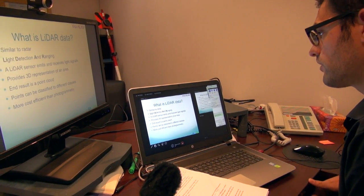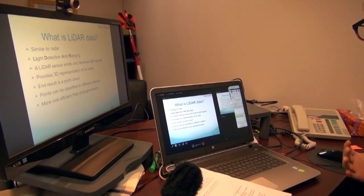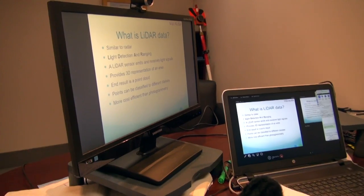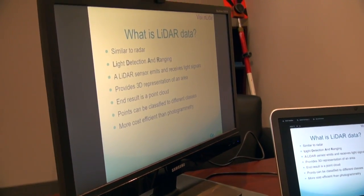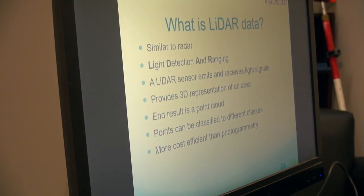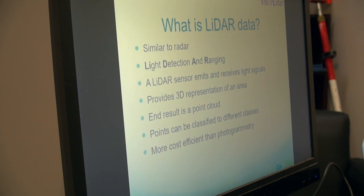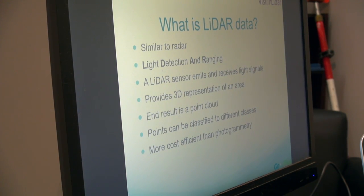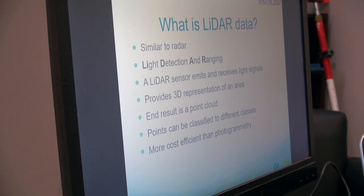LiDAR is increasingly replacing photogrammetry. What is photogrammetry? It's similar to LiDAR in that it's used to measure — we use photos to measure distances between objects. However, photogrammetry only uses light from the photo and doesn't give you a Z value. LiDAR is more interesting in that it gives you also a Z coordinate.